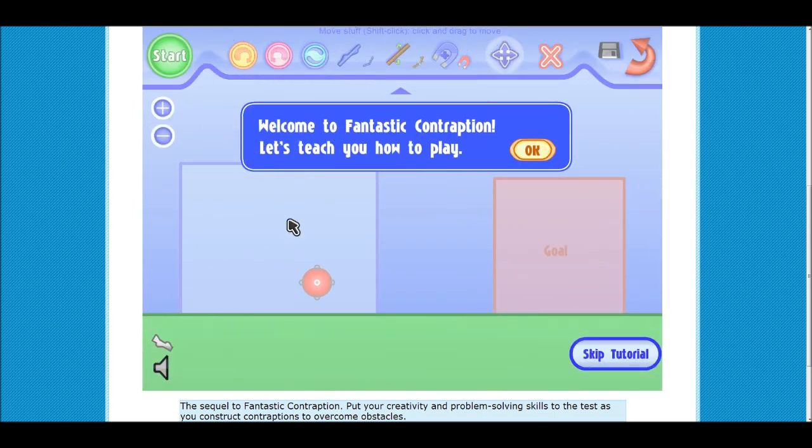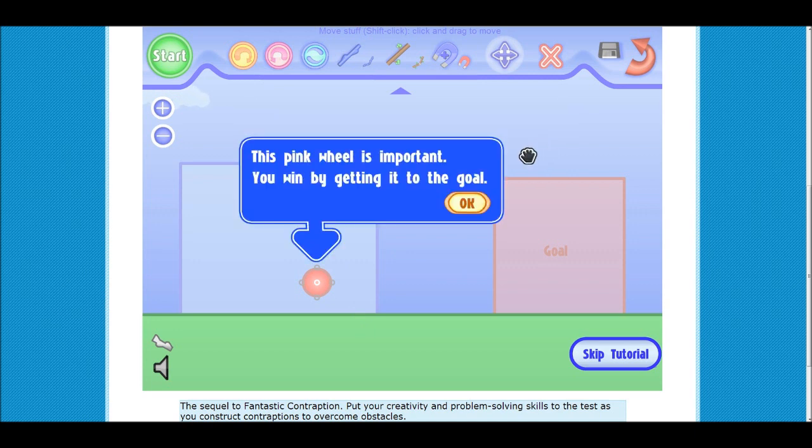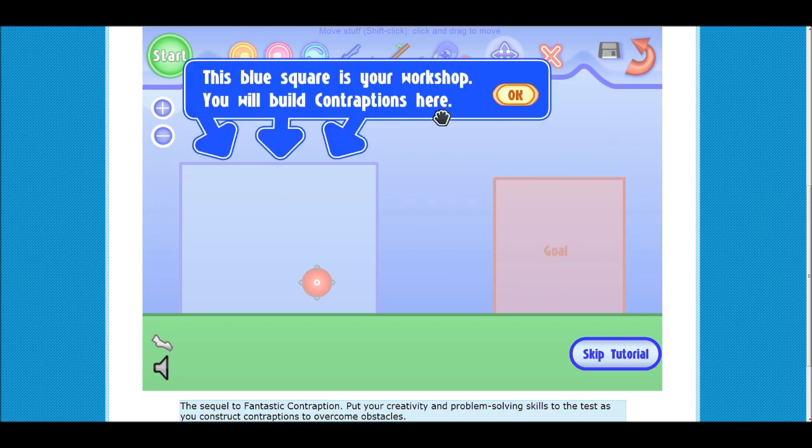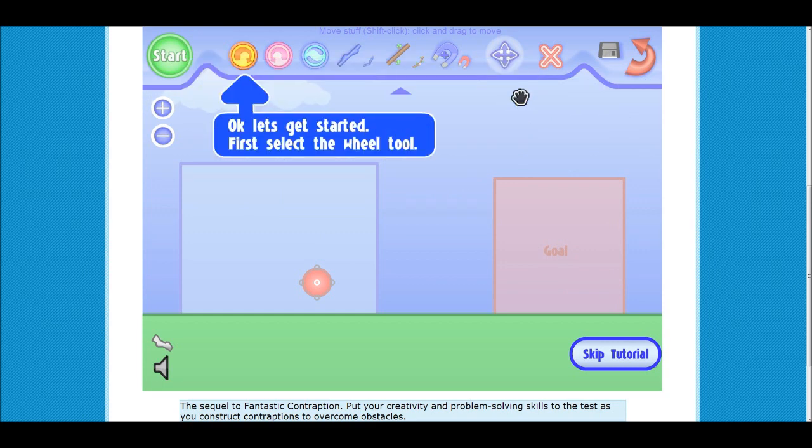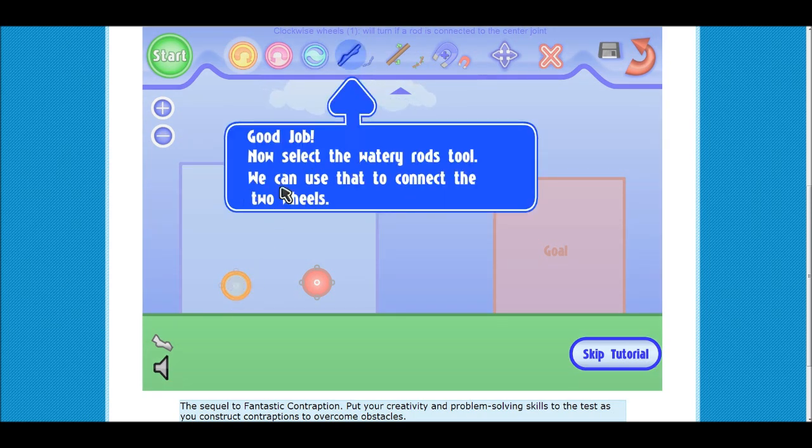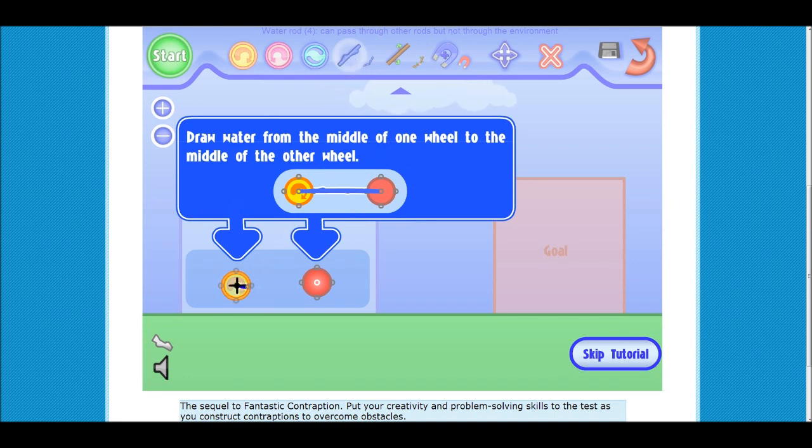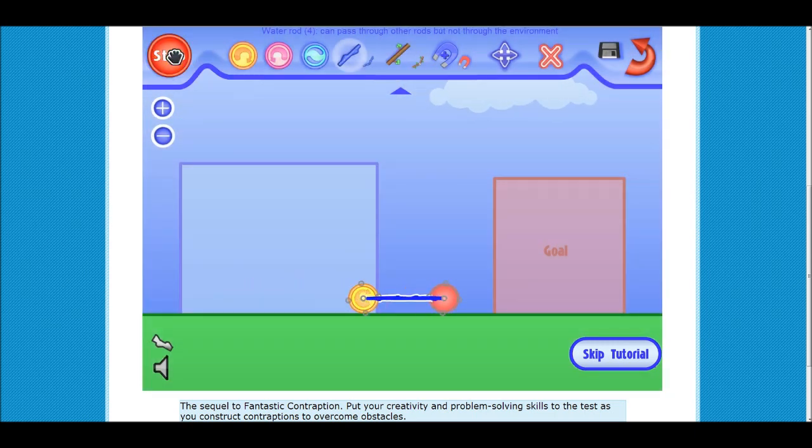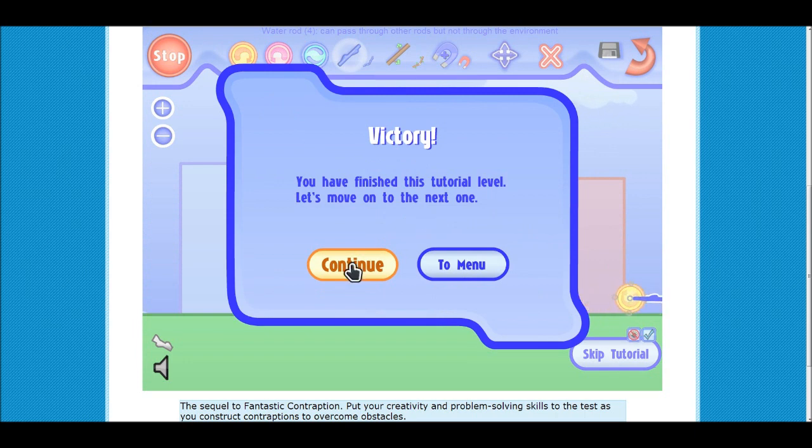The purpose of this game is you build things to make your piece of the contraption get into the goal. They're going to teach us how to play. The big wheel is important because that's what we want to get to the goal. This is the goal. The blue square is where we start, it's our workshop. This wheel spins clockwise. So I'm going to put one here. The water rod tool can connect wheels. I select it and connect from middle to middle. Then we start it and that just pushes it along right into the goal. That's the concept of the game.